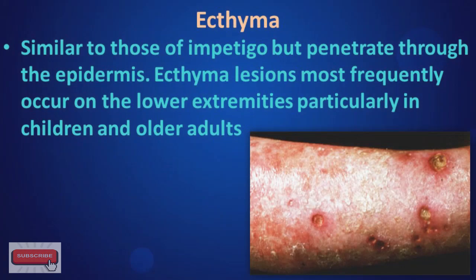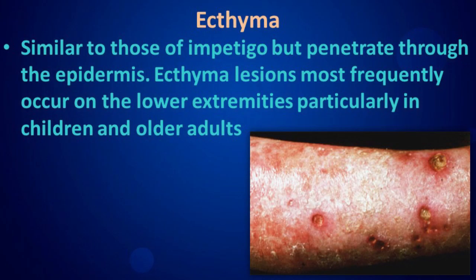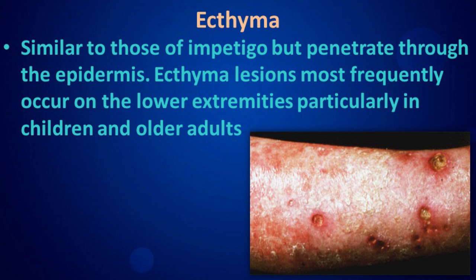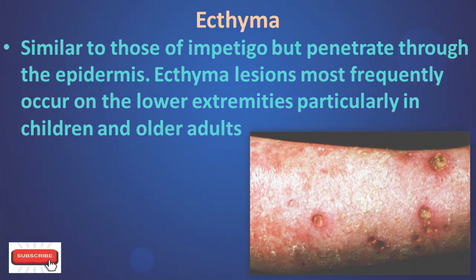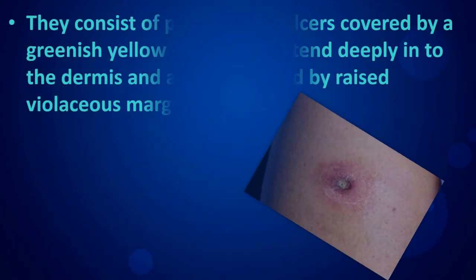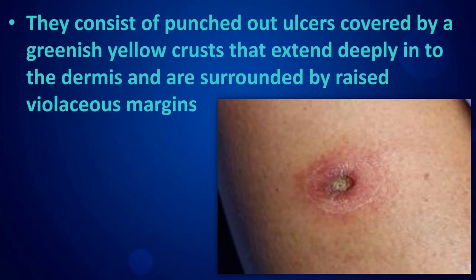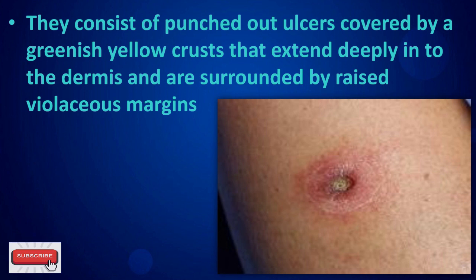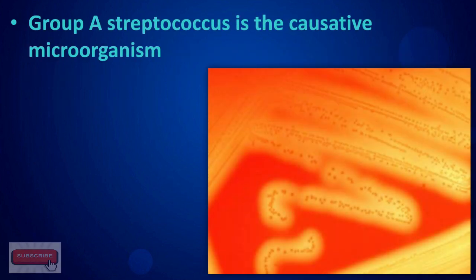Ecthyma lesions are similar to those of impetigo but penetrate through the epidermis. They most frequently occur on the lower extremities, particularly in children and older adults. They consist of punched-out ulcers covered by greenish-yellow crusts that extend deeply into the dermis and are surrounded by raised violaceous margins. Group A Streptococcus is the causative microorganism.